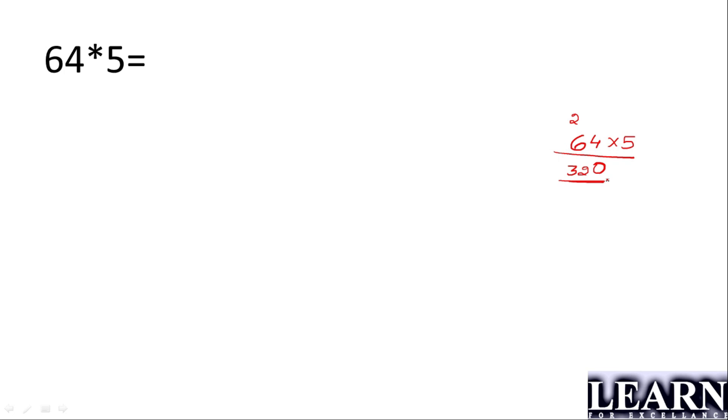In this video I'm going to show you how to do it in a click. Whenever you have to multiply any number by 5, instead of multiplying by 5, just divide it by 2. What is half of 64? Half of 64 is 32. Once we have 32, add one 0 to it. That is our final answer.